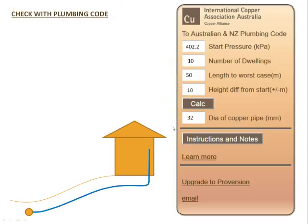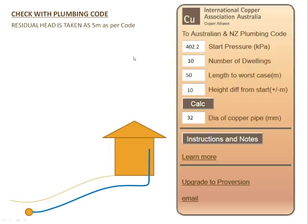Now let's see how this compares with the plumbing code. We take our residual head as 5 meters, because that's what the code says. The program actually uses 15 meters, because that's what the copper association wanted to use, and that's the pressure required by a lot of modern fixtures anyway. However, in this version, to make it agree with the plumbing code, we've used 5 meters.